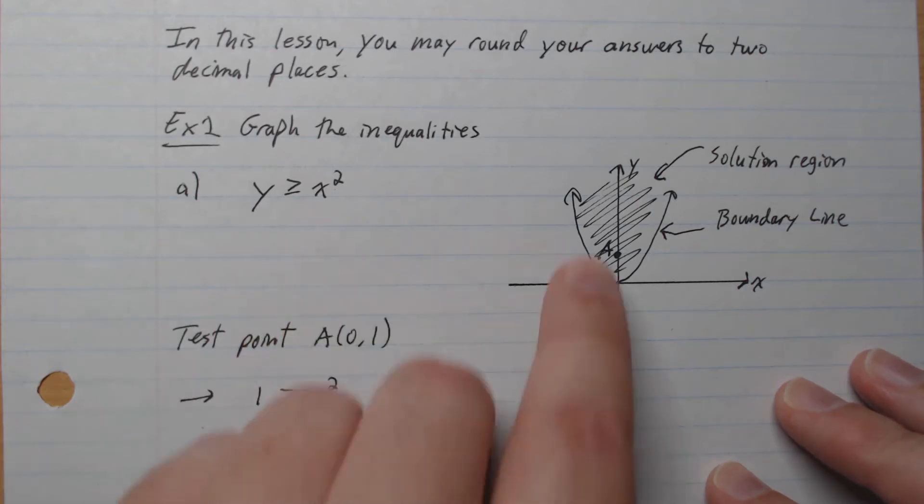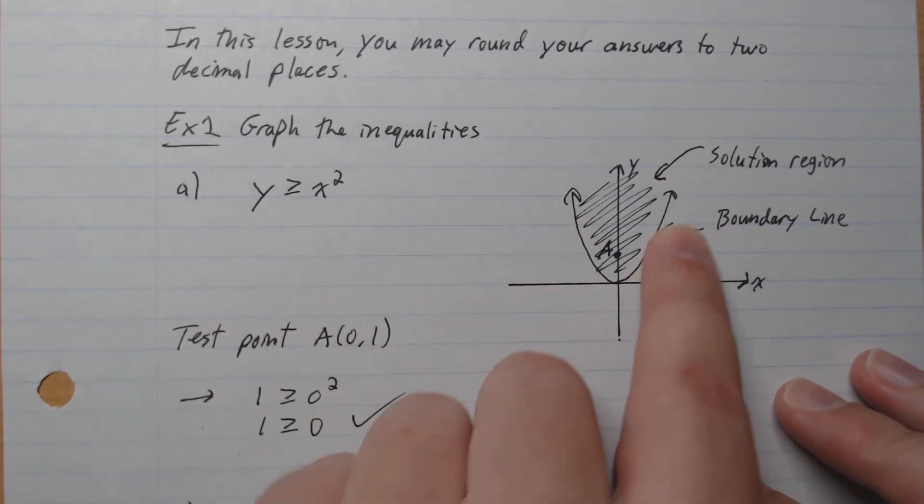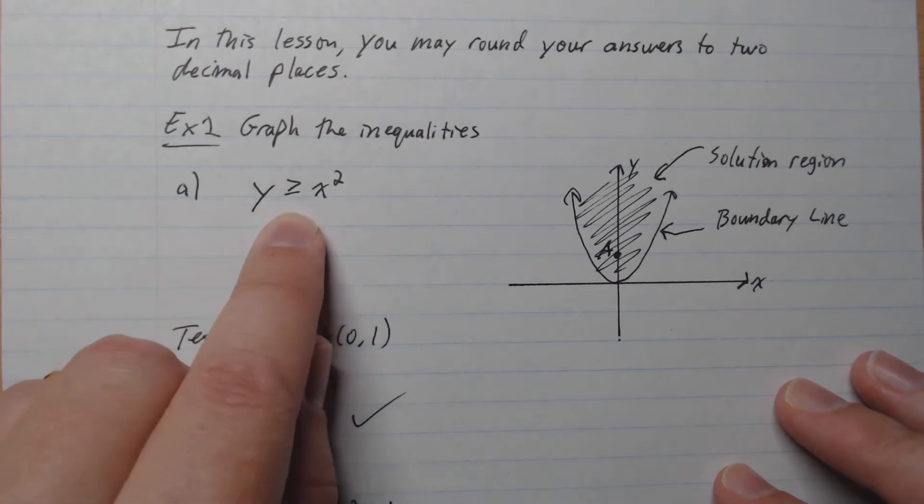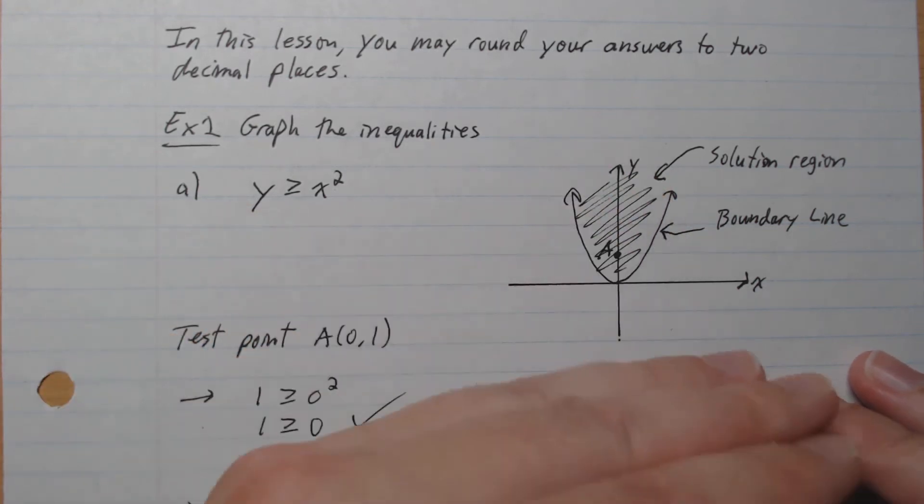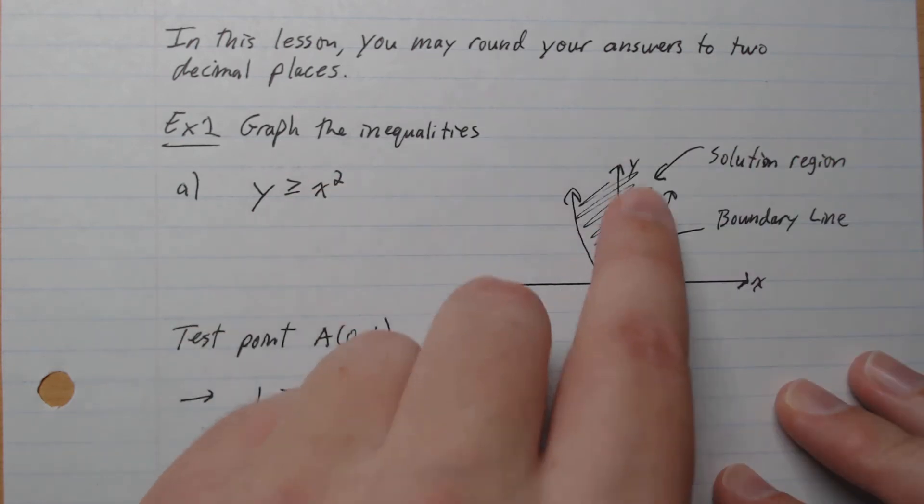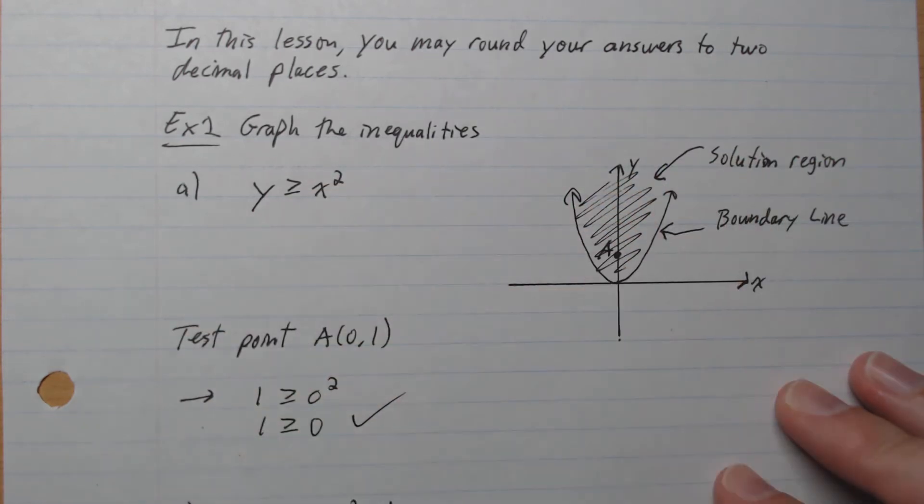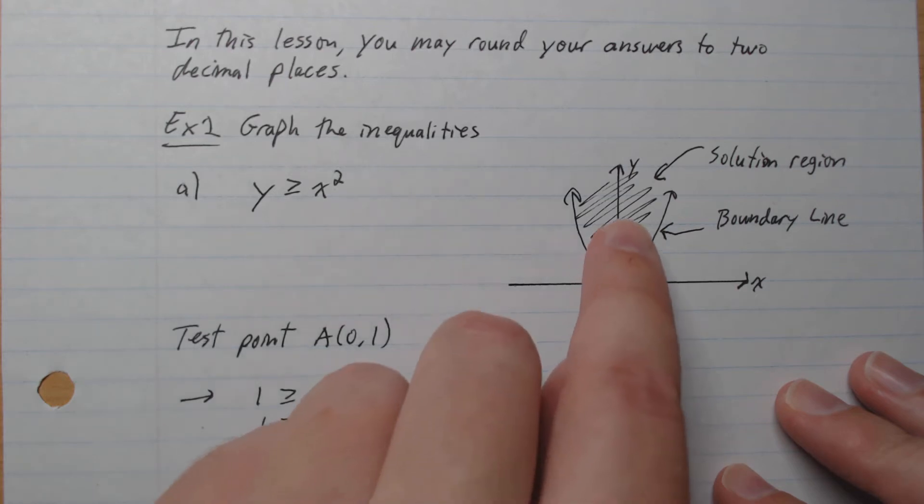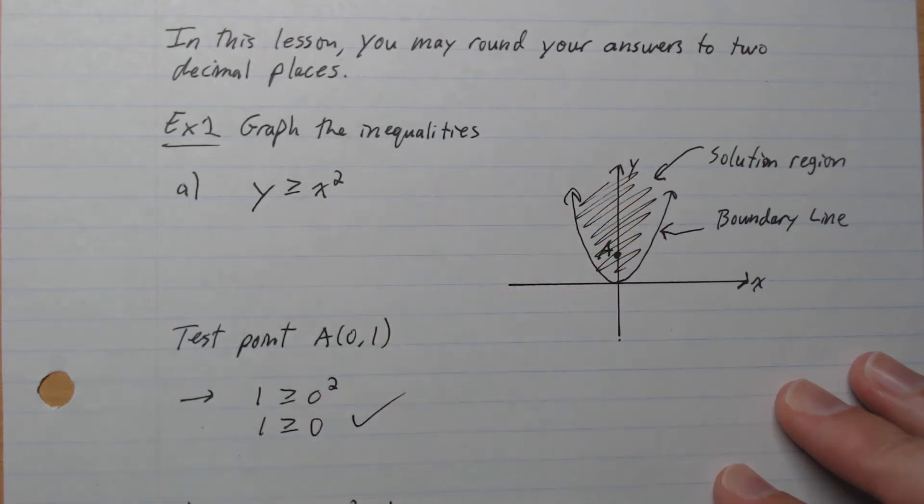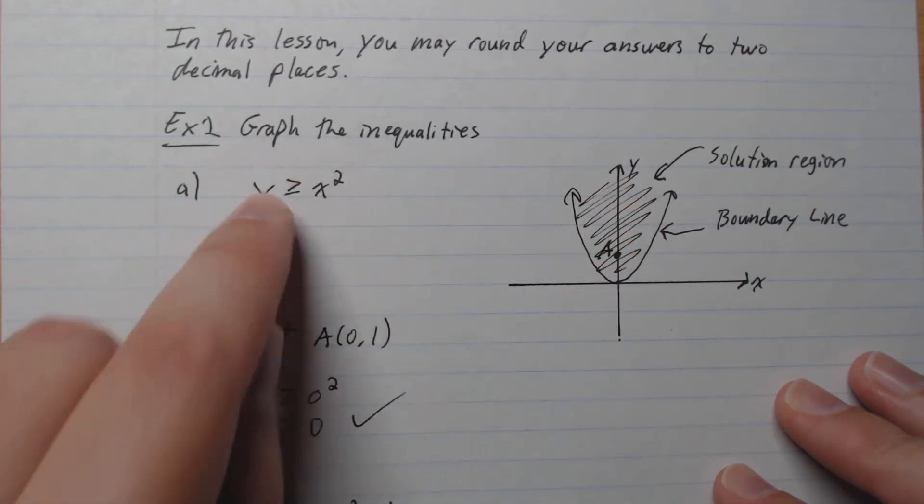So what we have here is x squared, and this is our boundary line. And because we're allowed to be equal, it's solid. So we have a solid line, x squared like that. And what we're looking at is y greater than x squared. So this region here is above the x squared. So this is what's called our solution region. So any points within the solution region is a solution to the inequality.